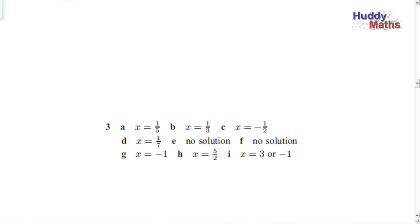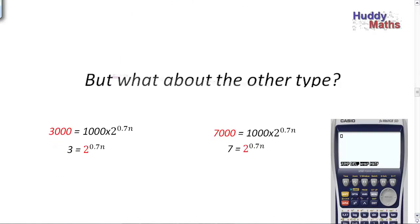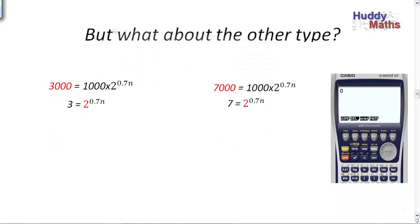Now, what about the other type — the ones where when you divide both sides by 1,000, you don't get the same base? The 3 and the 7 are not able to be written as powers of 2. Could you try to write both sides as a power of some other base? What's a convenient base in our number system? It's a decimal system — dec means ten. What about trying to write both 3 and 2 as a power of ten?